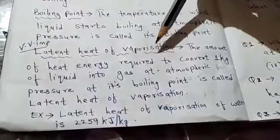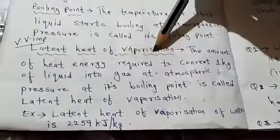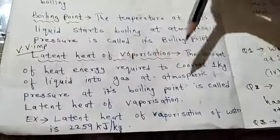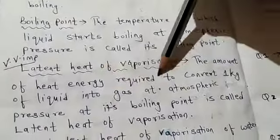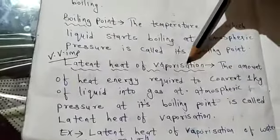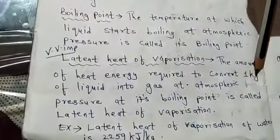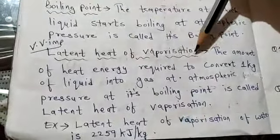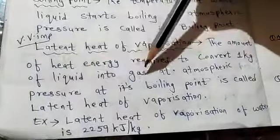You can compare it with latent heat of fusion. Fusion means melting, which means solid to liquid, while vaporization means liquid to gas. There is only a slight change in the definitions. The amount of heat energy required to convert — if it is latent heat of vaporization, that is 1 kg of liquid into gas. And if it is latent heat of fusion, it is the amount of heat energy required to convert 1 kg of solid into liquid.